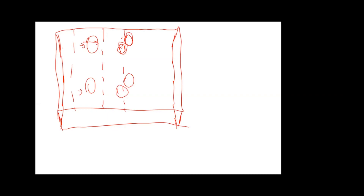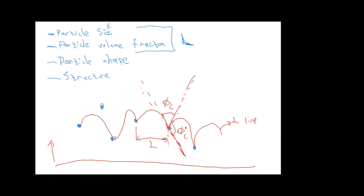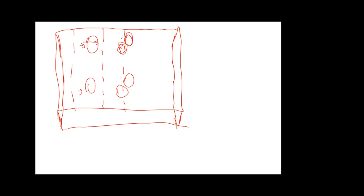For precipitates, the dislocation cannot cut the particle into two. They are just pinned at the particles at the two pin points and they extrude between particles, which is called Orowan looping or bowing. The dislocation needs to bypass them and might form loops.